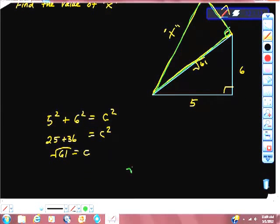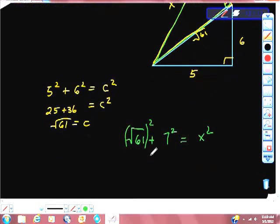So now we have square root of 61 squared, right, plus 7 squared is equal to x squared. I'm going to do some more math here, and we get the square root of 61 squared is 61, and 7 squared is 49, is equal to x squared.